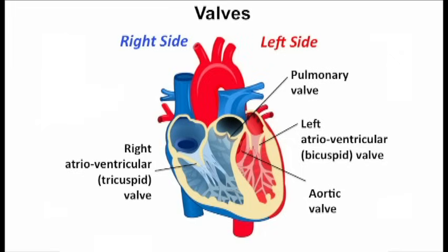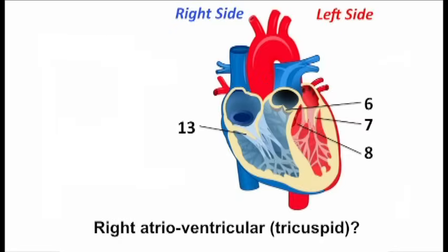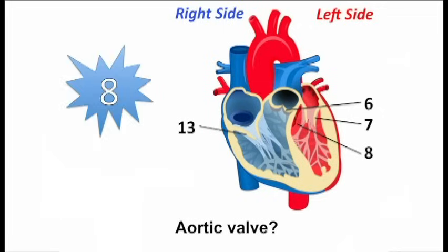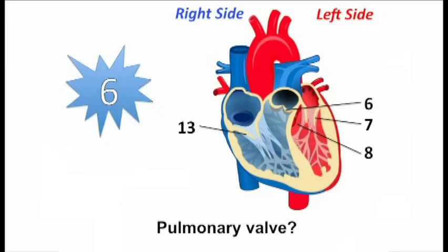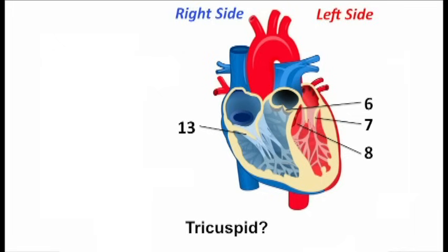Now the valves. Say the number. Right atrioventricular tricuspid valve. Aortic valve. Pulmonary valve. Left AV or bicuspid valve. Tricuspid. Bicuspid.